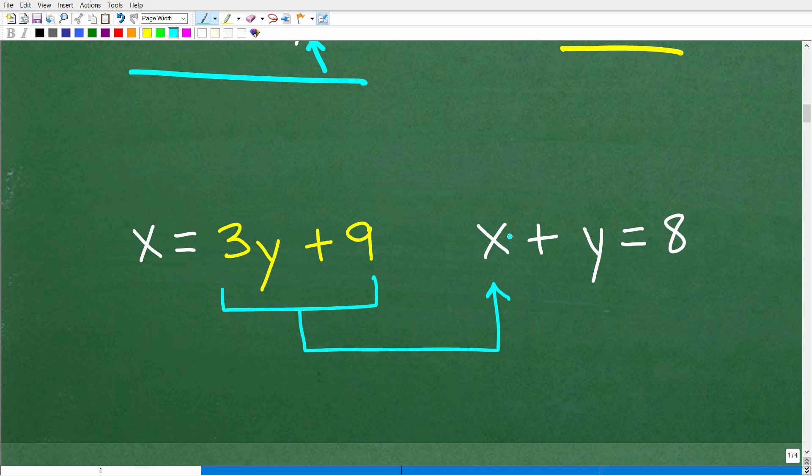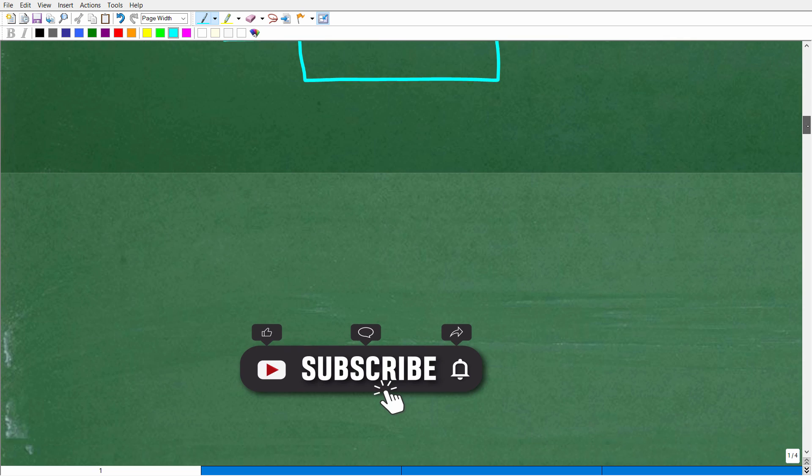And again, we're going to replace this X right here with all of this stuff, 3Y plus 9. And when you replace a variable, OK, this is important right here, with another kind of expression, always use parentheses. OK, this will really help you not make errors, algebraic errors, especially when you have to use the distributive property. But anyways, let's go ahead and take the next step, which, of course, is having you subscribe to my YouTube channel. I definitely need your support.